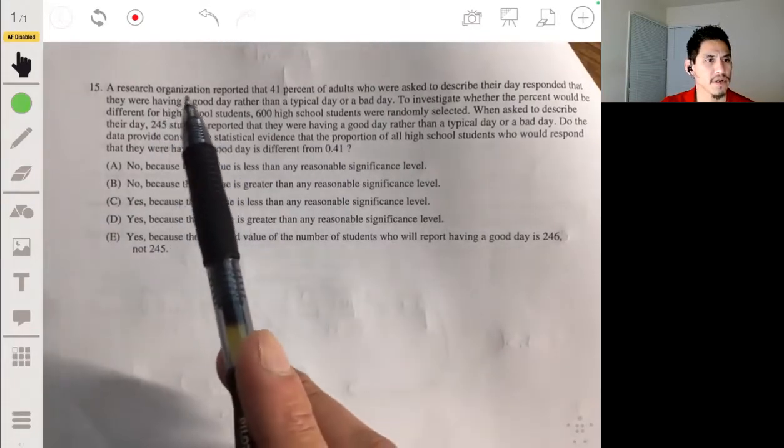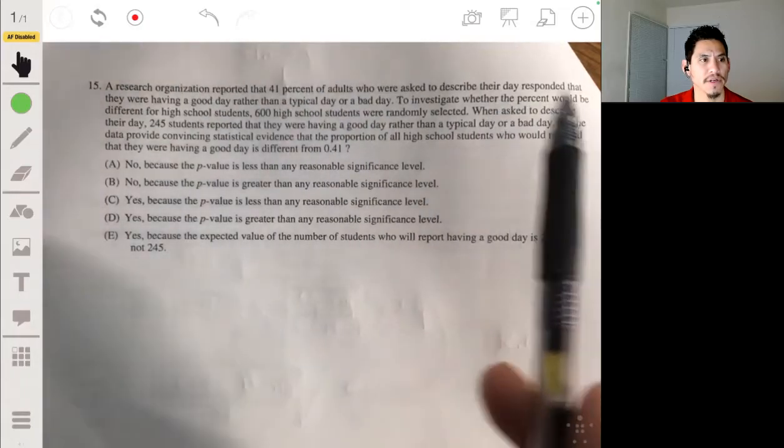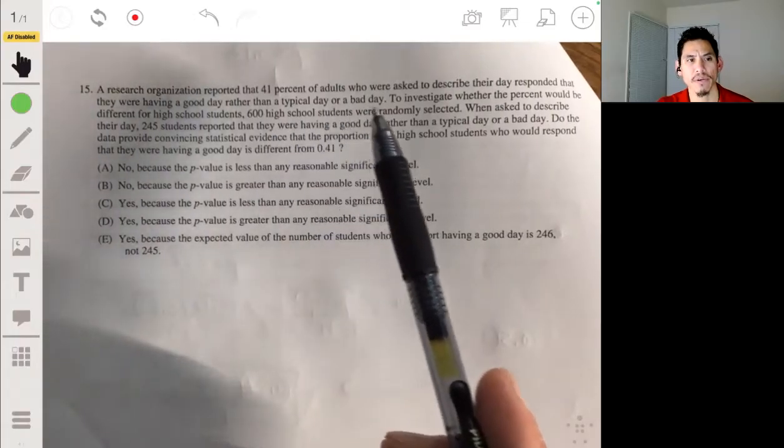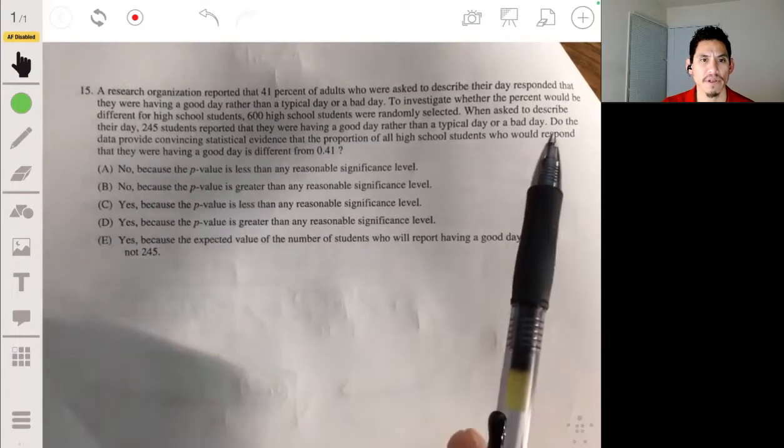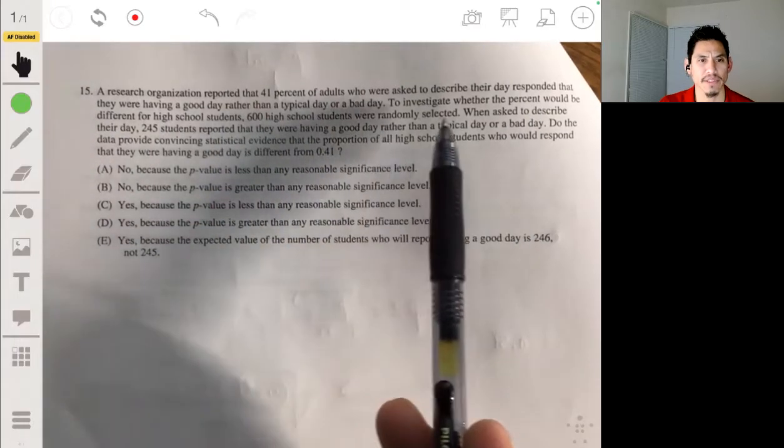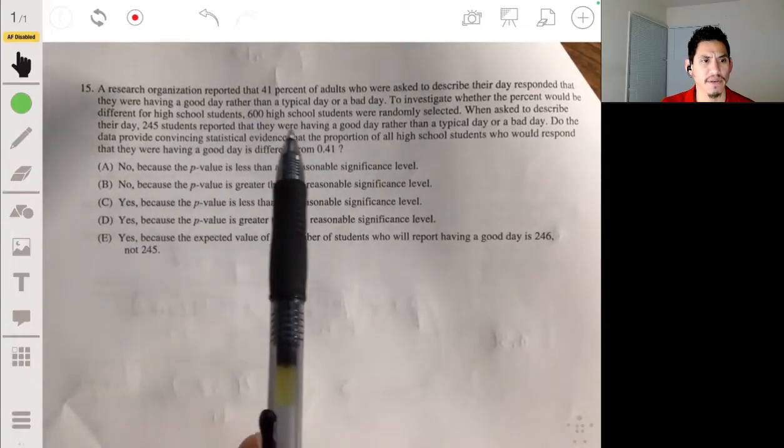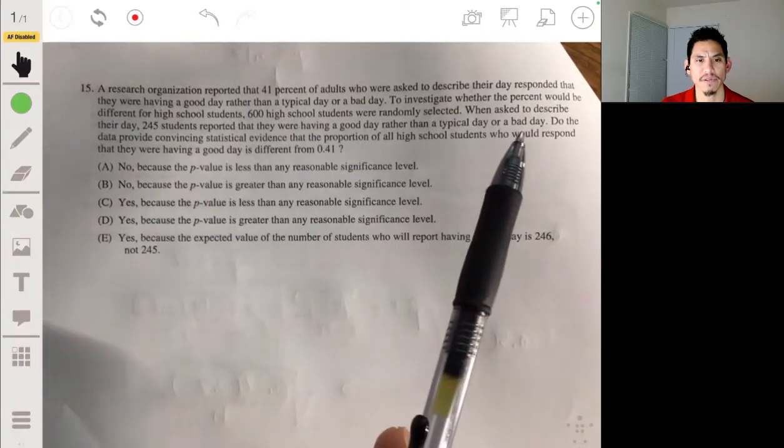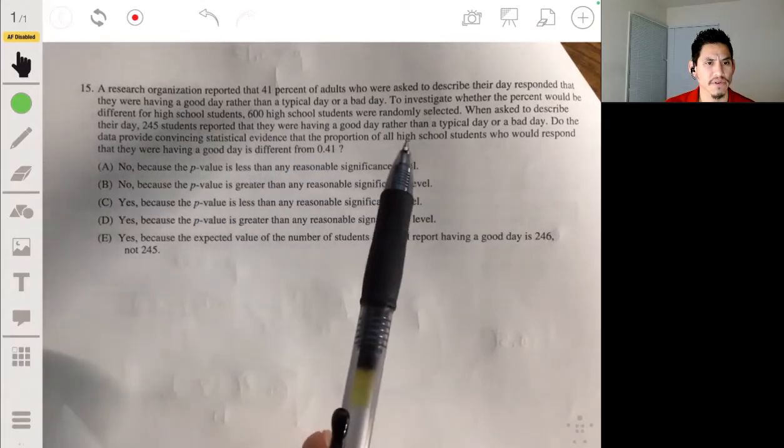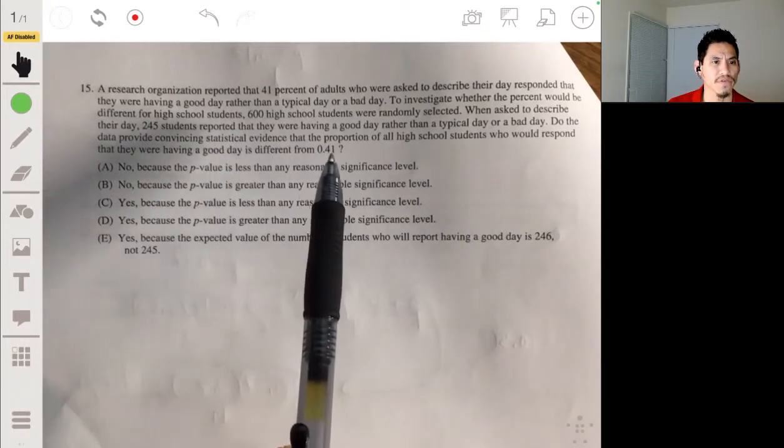Alright, so 15: A research organization reported that 41% of adults who were asked to describe their day responded that they were having a good day rather than a typical or bad day. Investigate whether the percent would be different for high school students. 600 high school students were randomly selected.